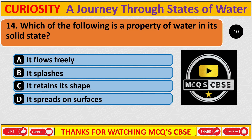Which of the following is a property of water in its solid state? The correct answer is C: It retains its shape.